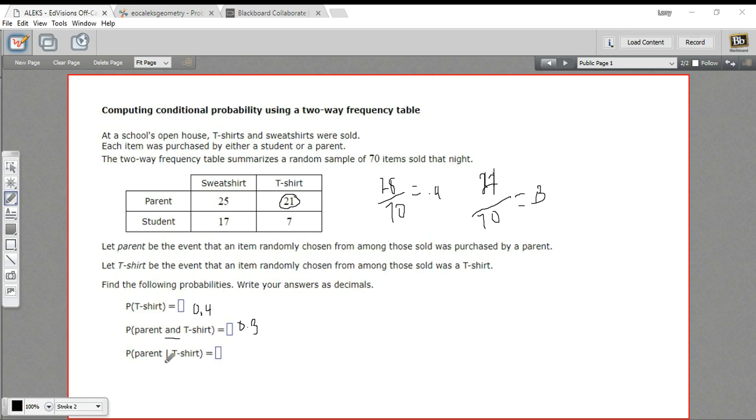What that means, the probability of a parent given t-shirt, is we only look at the t-shirt category. We ignore sweatshirt. And that means our total that we put our probability over is different. It's just the t-shirt total. So 21 plus 7 is 28. That's our total. So that's going to go on the bottom of the fraction.